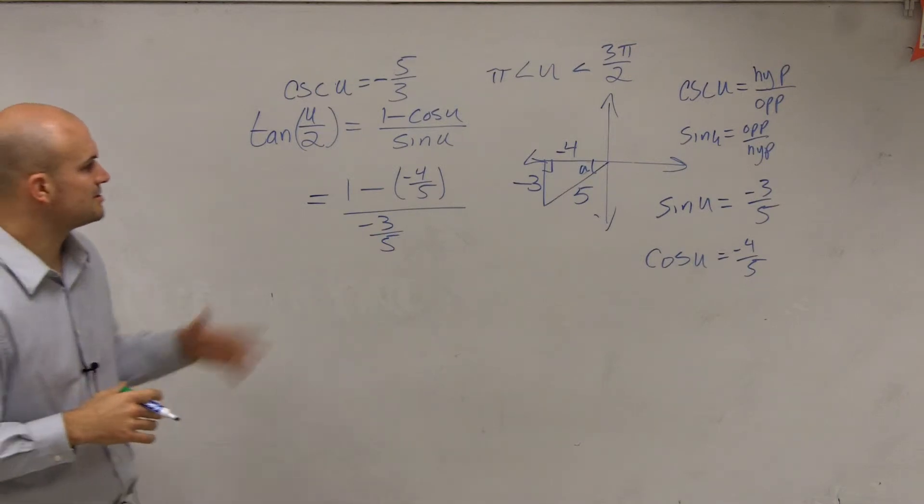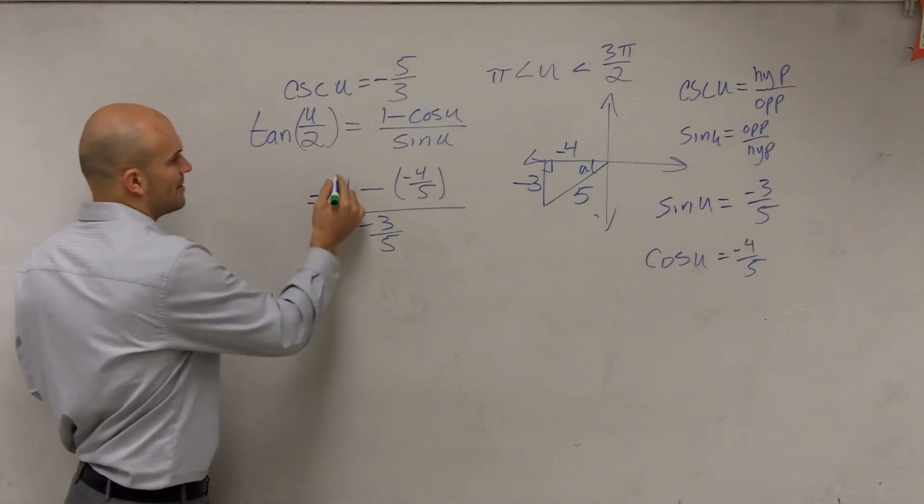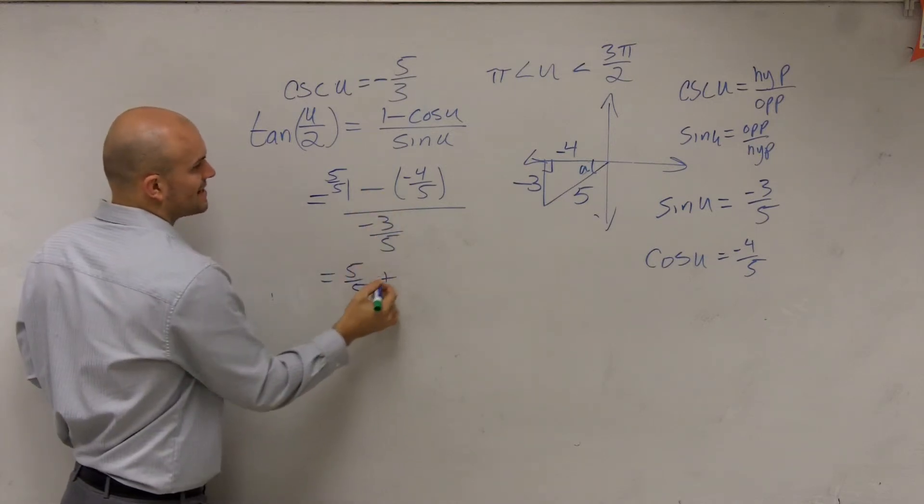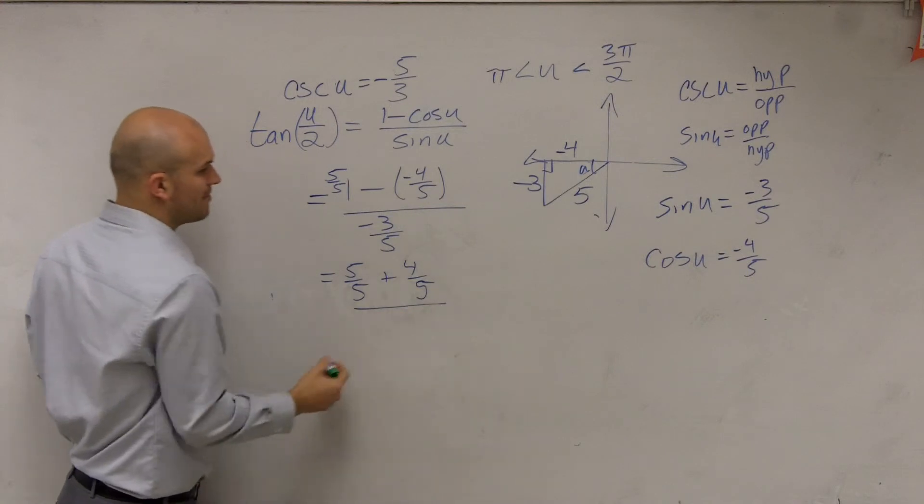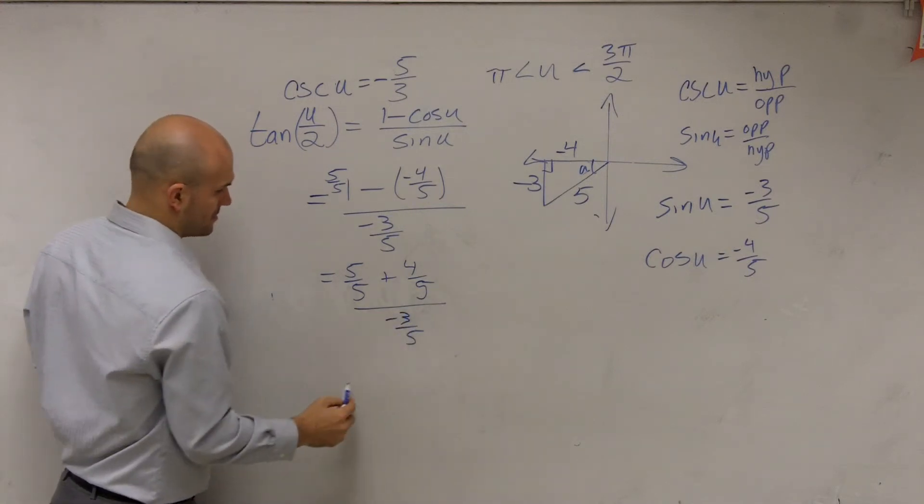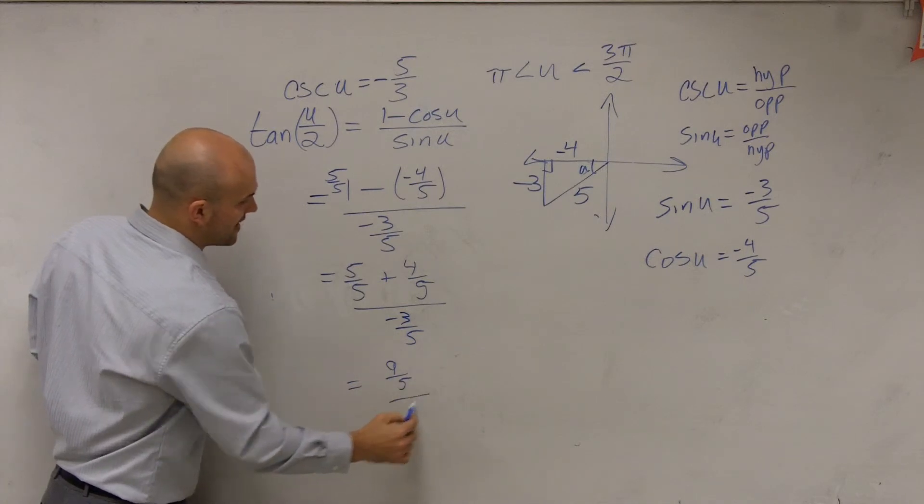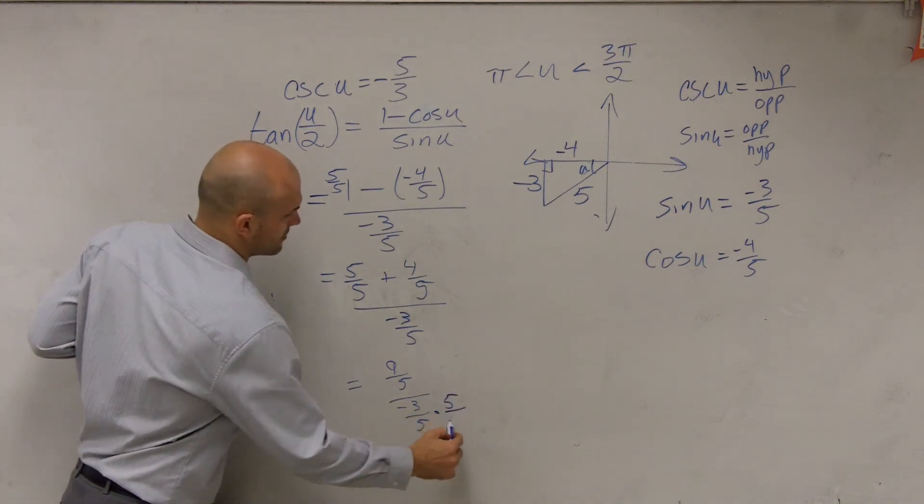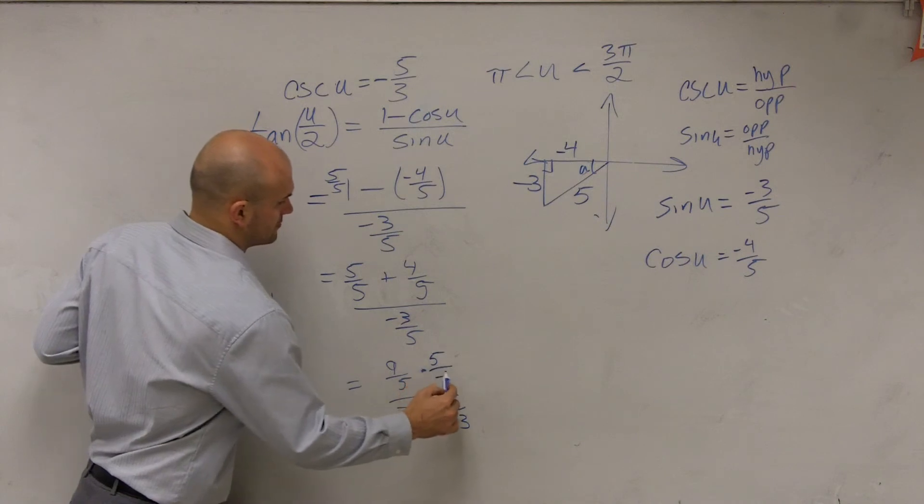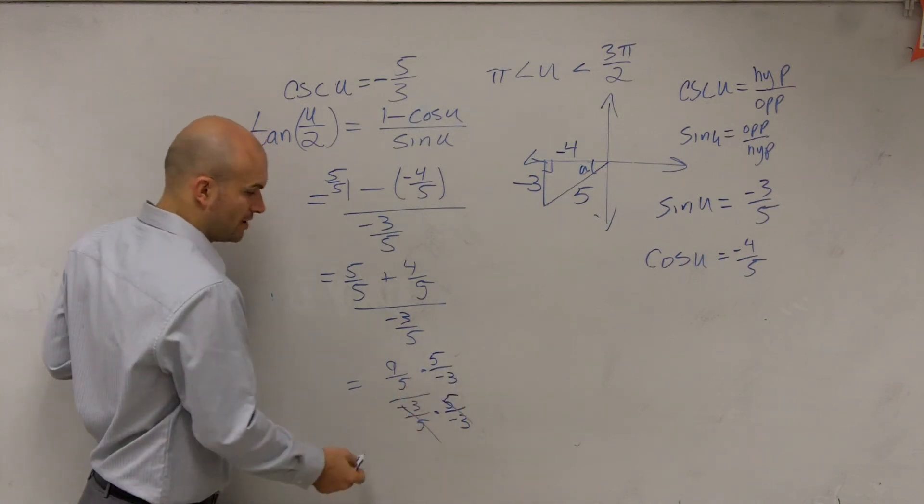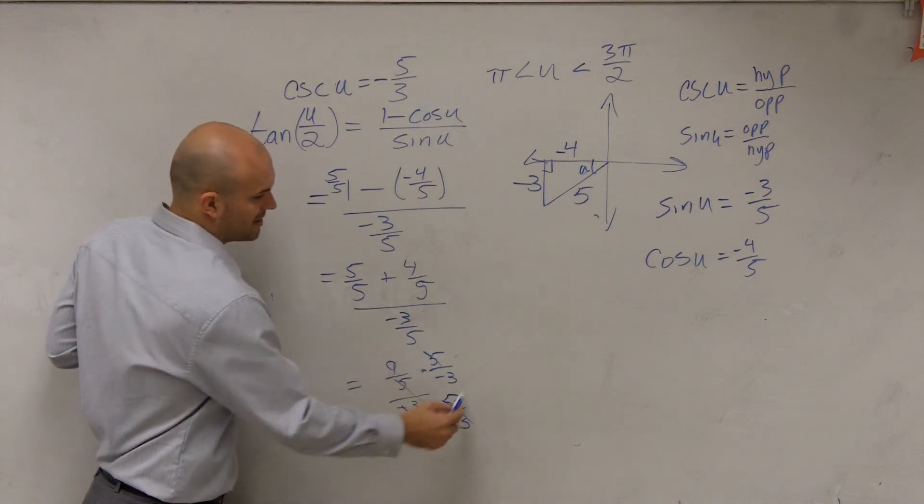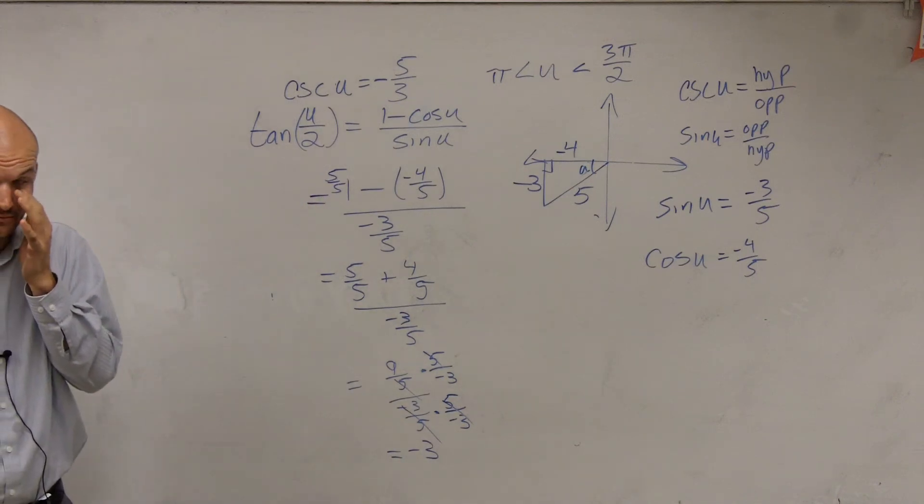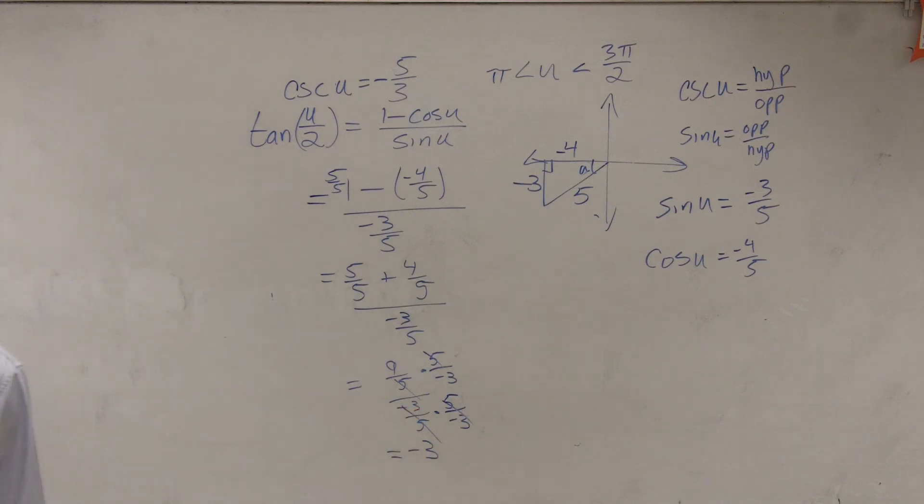So what I would recommend doing here is combining our numerator. I'd multiply by 5 over 5. Therefore, I have 5 over 5. That turns into a positive 4 over 5 divided by negative 3 over 5, which equals 9 fifths divided by negative 3 fifths. Then, to get our fraction off the bottom, we'll multiply by the reciprocal. That multiplies out to 1. Those divide out to 1. 9 divided by negative 3 equals a negative 3. Ta-da. There we go.